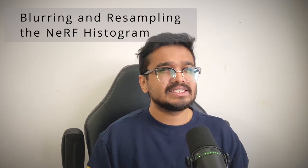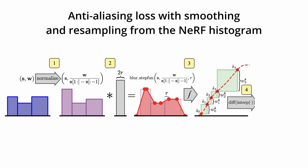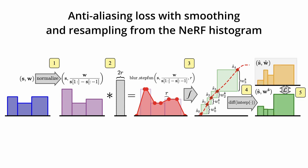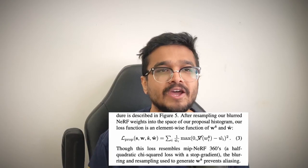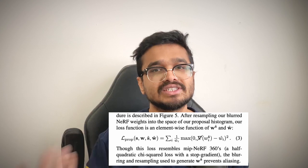So the authors fix this with a neat signal processing trick. They convolve the NERF distribution to form a piecewise linear probability density function, then compute the cumulative distribution function of this and slice up that CDF by the proposal network's bin endpoints. Finally, by taking the difference between adjacent points, they reconstruct a new histogram that has the same bin endpoints as the proposal network. Now these two distributions share the same coordinates and they can employ a simple element-wise loss to train the proposal network to output distributions similar to the NERF network. And that's a hell of a trick.